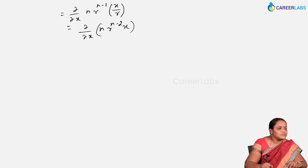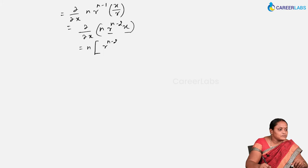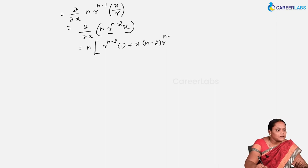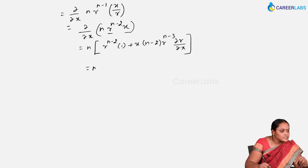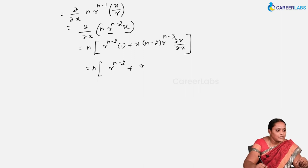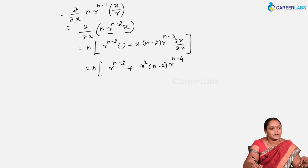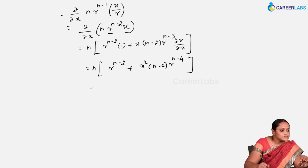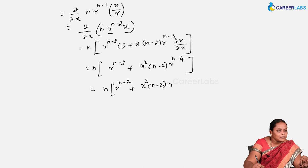Now we differentiate this term again. n is common. It is a product of two functions: r^(n-2) times differentiation of x is 1, then plus x times differentiation of r^(n-2), which is (n-2)·r^(n-3)·(∂r/∂x). Since ∂r/∂x = x/r, this gives n times r^(n-2) plus x·x·(n-2)·r^(n-4), which is equivalent to n·r^(n-2) + x²·(n-2)·r^(n-4).